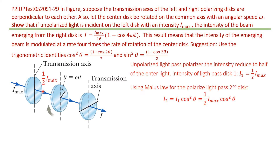For polarized light passing through a polarizer at angle theta, the intensity is calculated by Malus's law. The intensity for the light passing through the second disk is I₂ equal to I₁ cosine squared theta. Substituting I₁ equals one half of I-naught, we have I₂ equal to one half I-naught cosine squared theta.